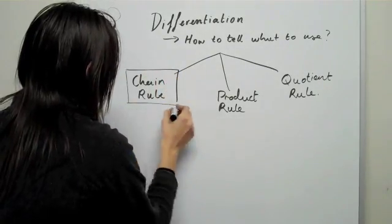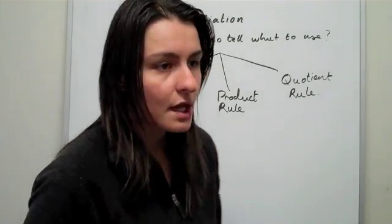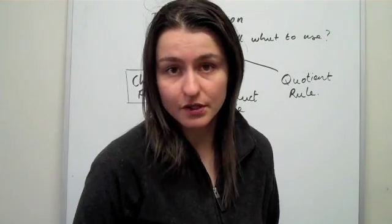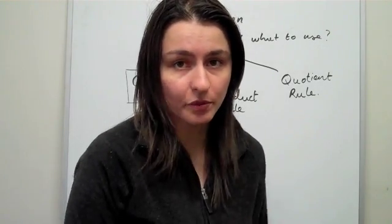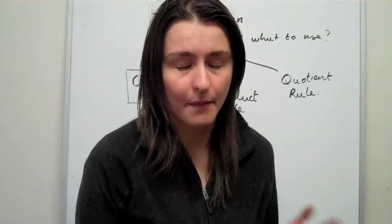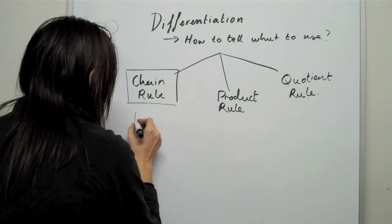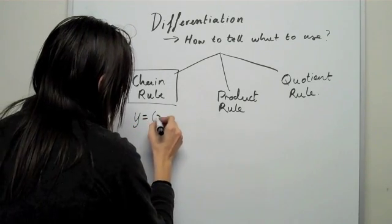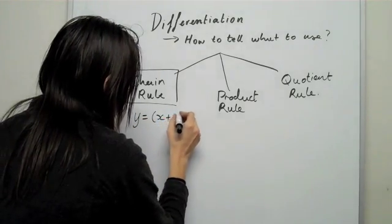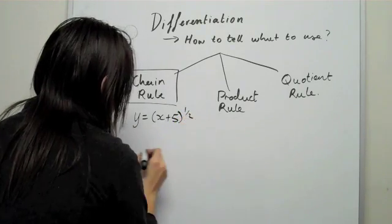The chain rule, the way I remember it, is that it's only to do with powers, and it's not to do with any multiplication of constants or variables together. What I mean by that is, for example, y equals (x + 5) to the power of 1/2.